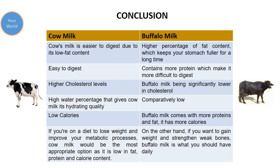After all, we have to choose the right one as per our health condition and need. If you are on a diet to lose weight and improve your metabolic processes, cow milk could be the most appropriate option as it is low in fat, protein, and calorie content. On the other hand, if you want to gain weight and strengthen weak bones, buffalo milk is what you should choose. That's all for today — if you like my videos or presentation, please do like and subscribe to our channel. Thank you.